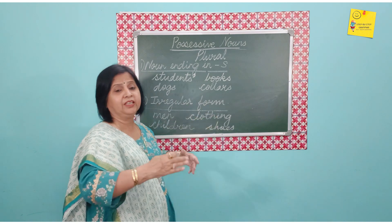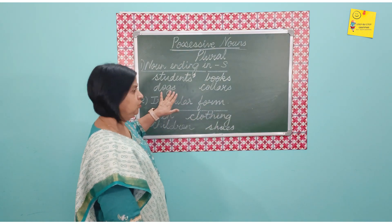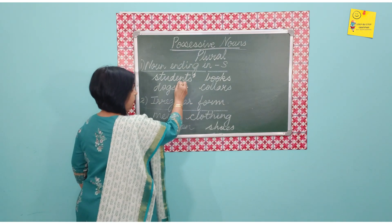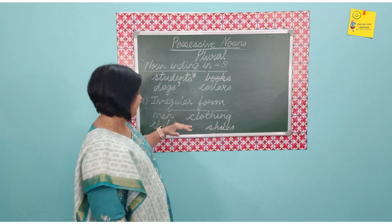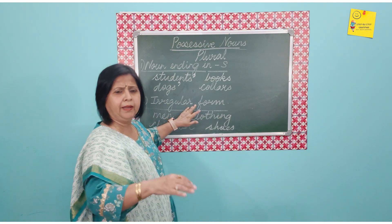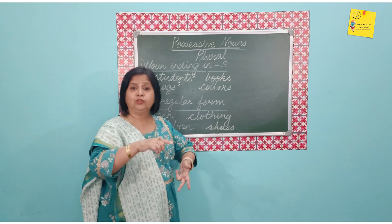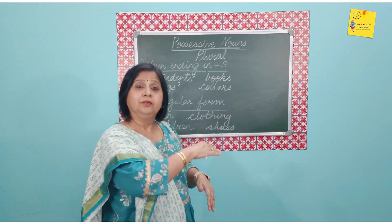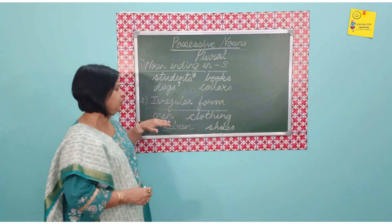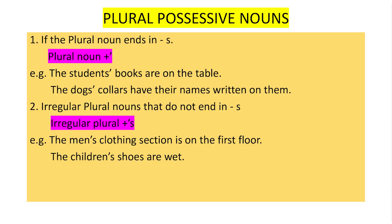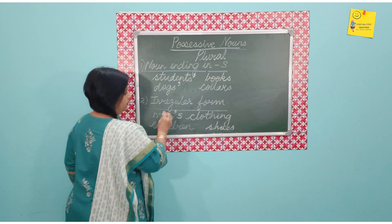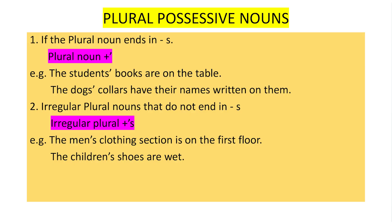The dogs' collars have their names written on them — dogs is plural so just add an apostrophe. Then we have the irregular plural form. Words like man/men, woman/women, child/children, goose/geese, tooth/teeth do not follow the standard S pattern. Since these are already plural but do not end in S, we apply the basic first rule: just add apostrophe S. So men's clothing — the men's clothing section is on the first floor. The children's shoes are wet.